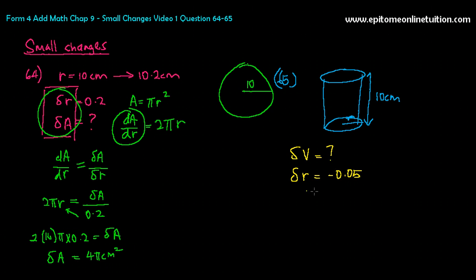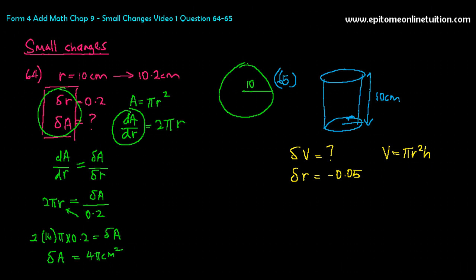From here, you need to form the equation. You're dealing with volume, so use the volume formula for a cylinder: V equals pi R squared H. Now here is a tricky part: are you going to find dV/dR or dV/dH? You use dV/dR because you have delta R. But there's an H in the formula — you can't differentiate with respect to R while H is still there, so you can't ignore H.